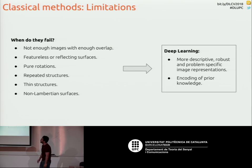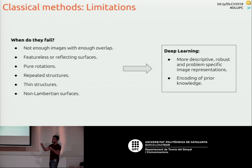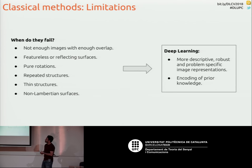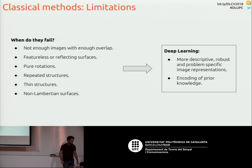With deep learning, one thing we can improve is descriptors. Convolutional neural networks extract very powerful image representations, so with better descriptors we get better matchings and better 3D. Also, since the network has seen many scenes, it has some prior knowledge encoded in the system, which helps reconstruct from a fewer number of images.